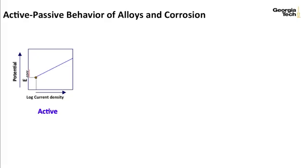So in uniform corrosion, which occurs for active metal, as we increase the potential, the current density, which is related to corrosion rate, also increases linearly when you plot it against potential against log of current density.